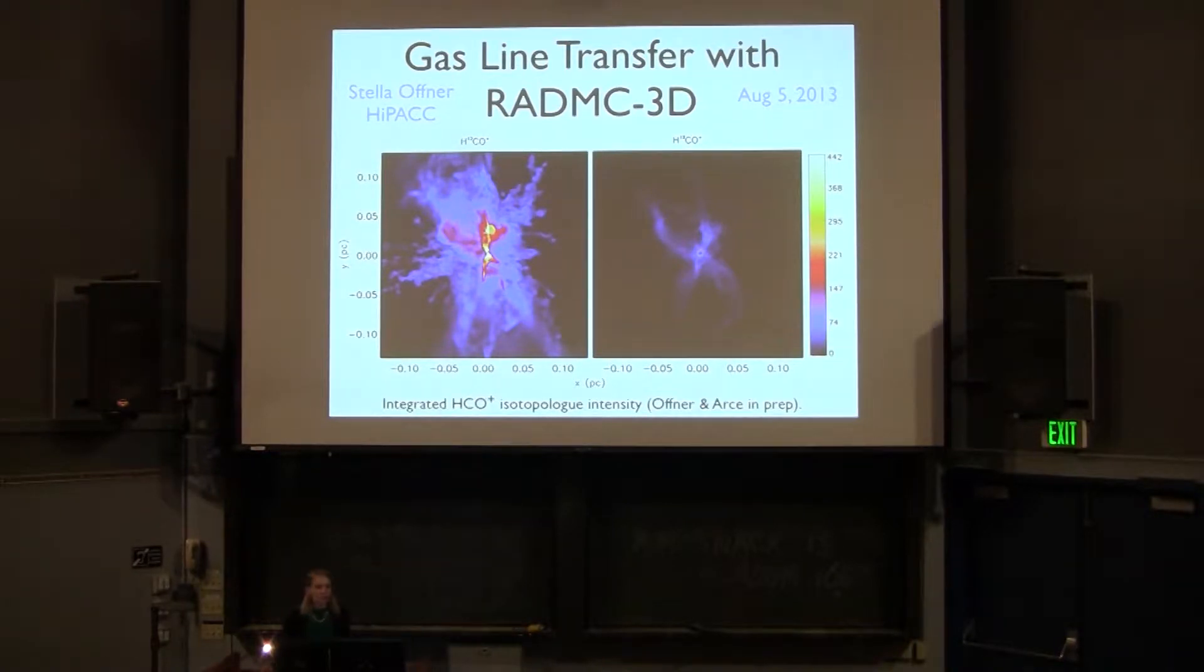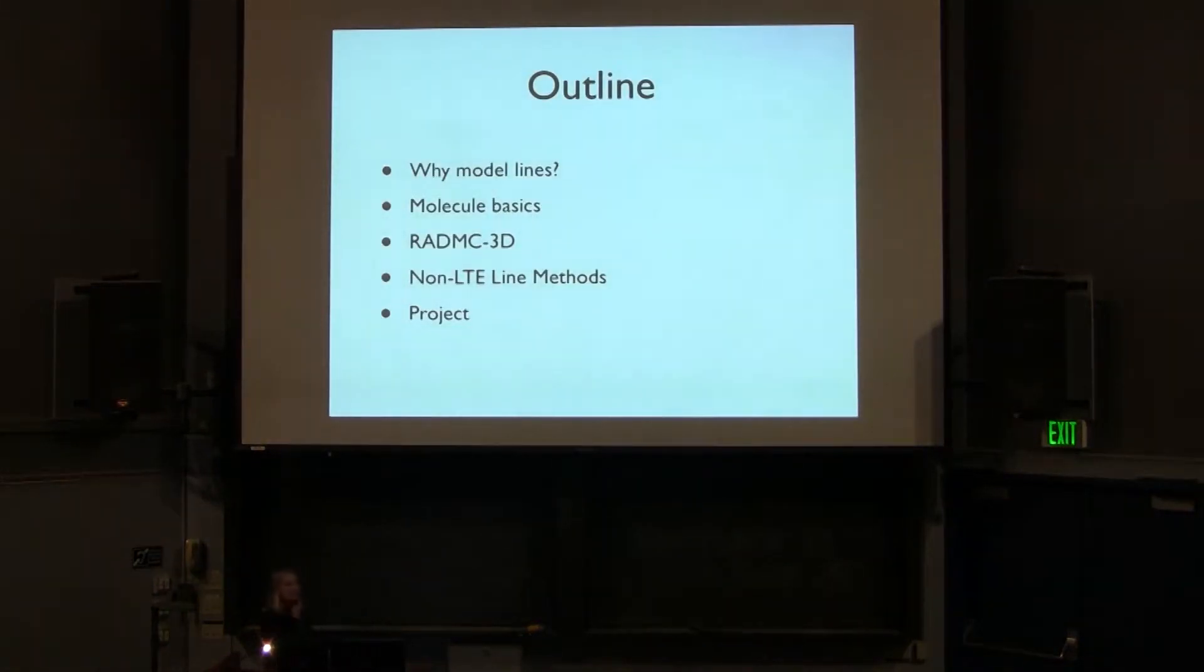Today I'm going to talk about gas line transfer with RADMC3D, and here's a quick example of what you can do with it. You can model molecular line emission, and here's H12CO+ and H13CO+, the first rotational transition showing you the integrated intensity. This is a forming protostar launching an outflow, so you can see these very nice cavities which show up in the HCO+ emission.